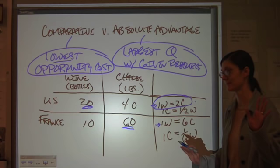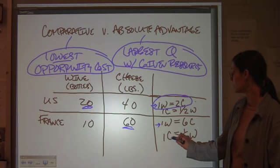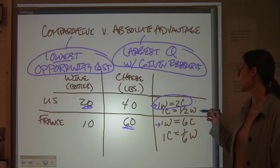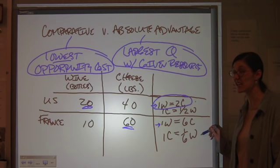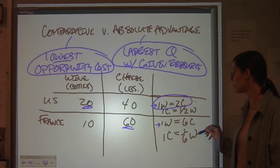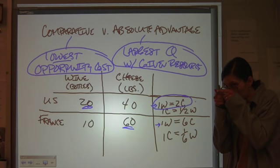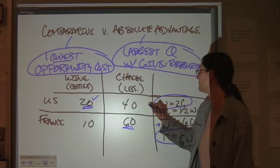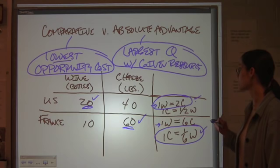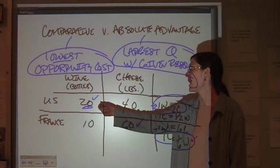Now, if we look at it with cheese, who has a comparative advantage in cheese? For the United States, if one cheese is equal to half a unit of wine versus France, where one cheese is equal to one sixth a unit of wine, they're giving up a small fraction of what the United States would give up here. So, we have an absolute and a comparative advantage in wine for the United States in this example. We have an absolute and a comparative advantage in cheese for France in this example. So, what should they do? The U.S. should produce wine, France should produce cheese, and they should trade.